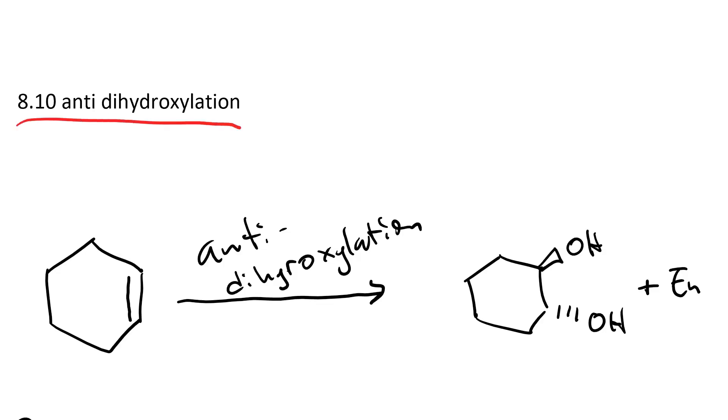Anti-dihydroxylation is another kind of addition reaction where you have an alkene and you add two hydroxyl groups. One above the plane of the molecule, that's the one that goes on the wedge, and the other below the plane of the molecule, that's the one that goes on the dash. And of course you also get the enantiomer.